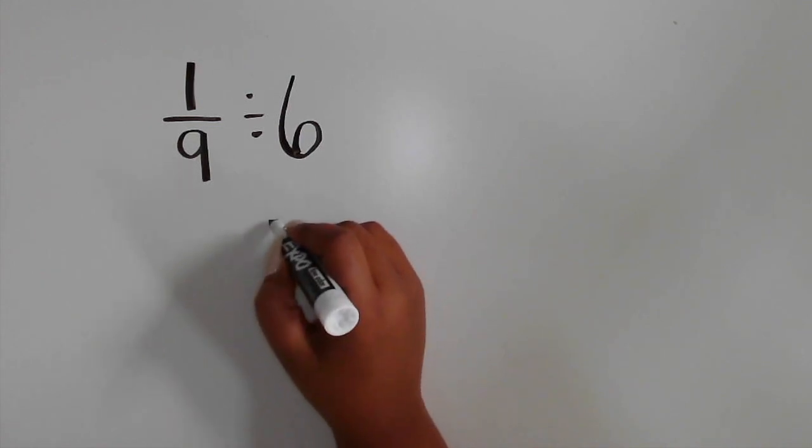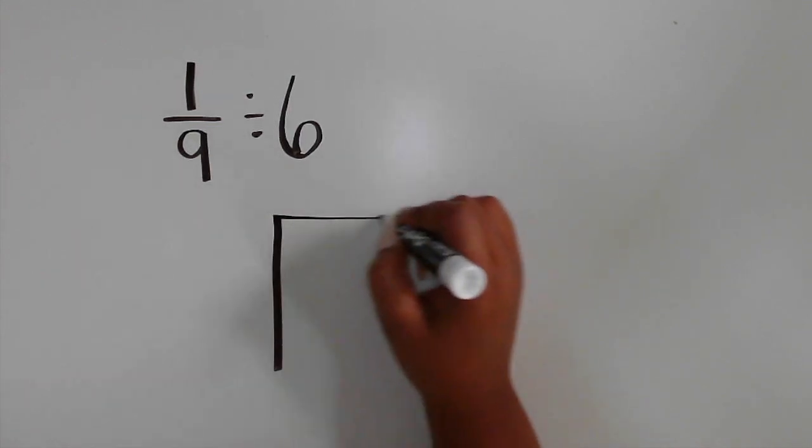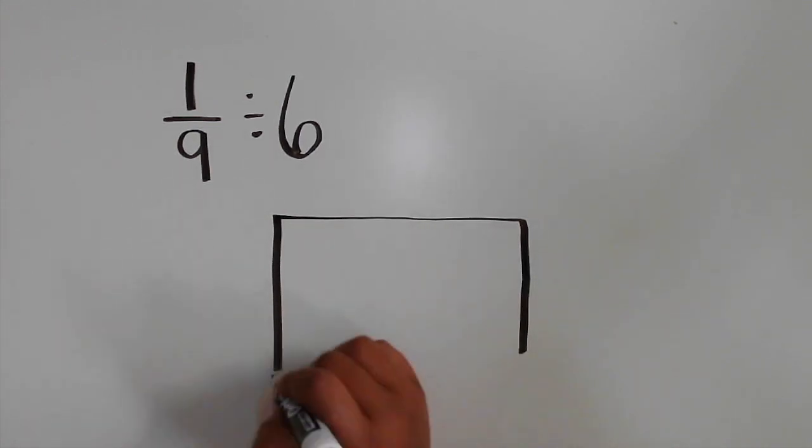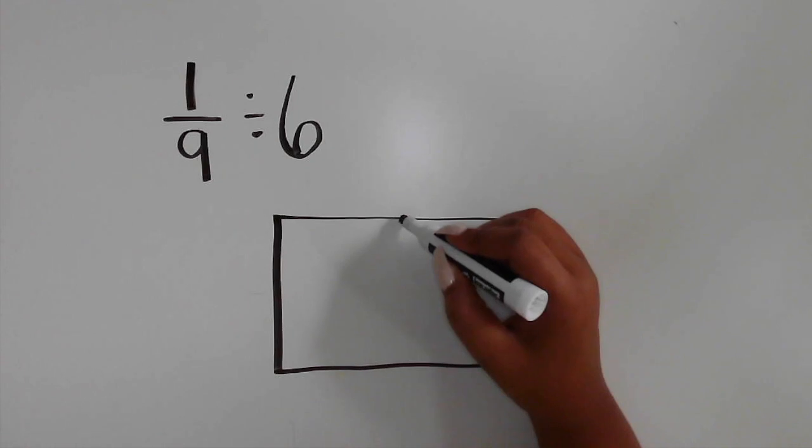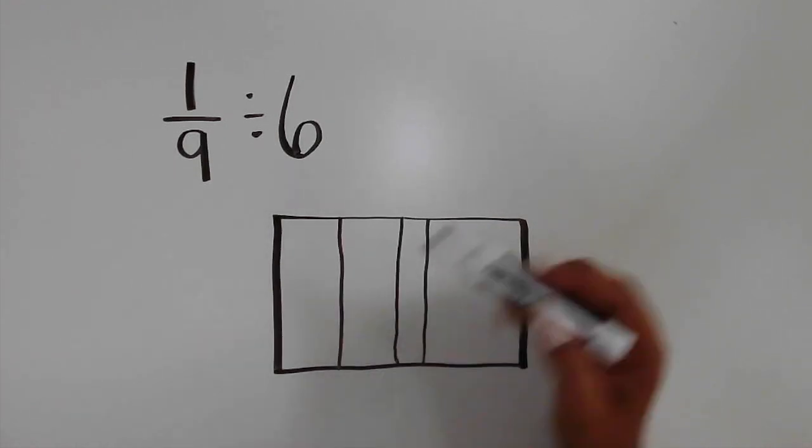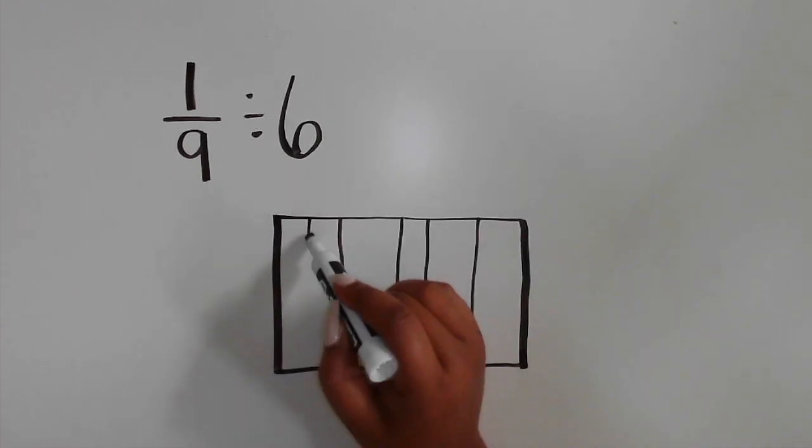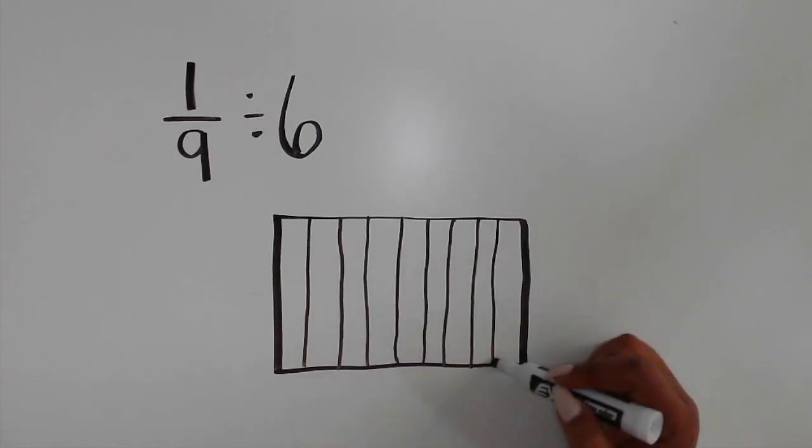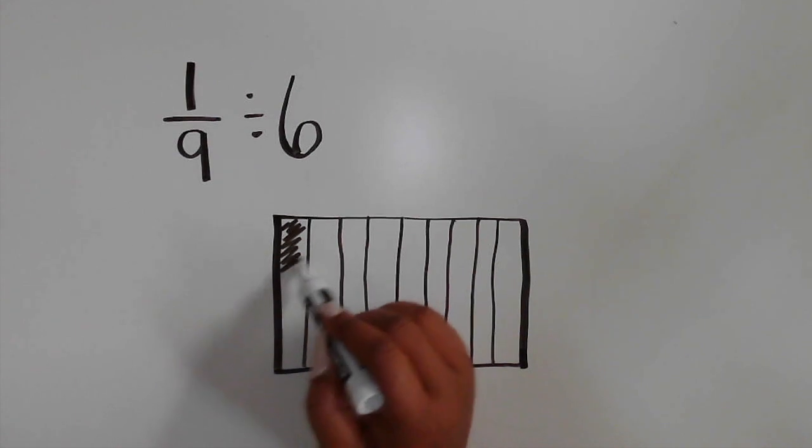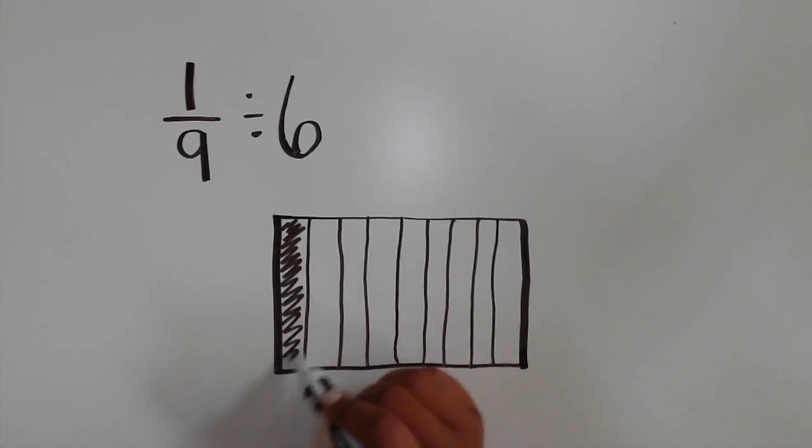1 ninth divided by 6. Start by drawing a rectangle as a whole in order to represent the 1 ninth in the expression. The denominator is 9, so partition the whole into ninths, similar to the way you partition the fifths. The fraction being divided is 1 ninth, so shade in 1 of the ninths.